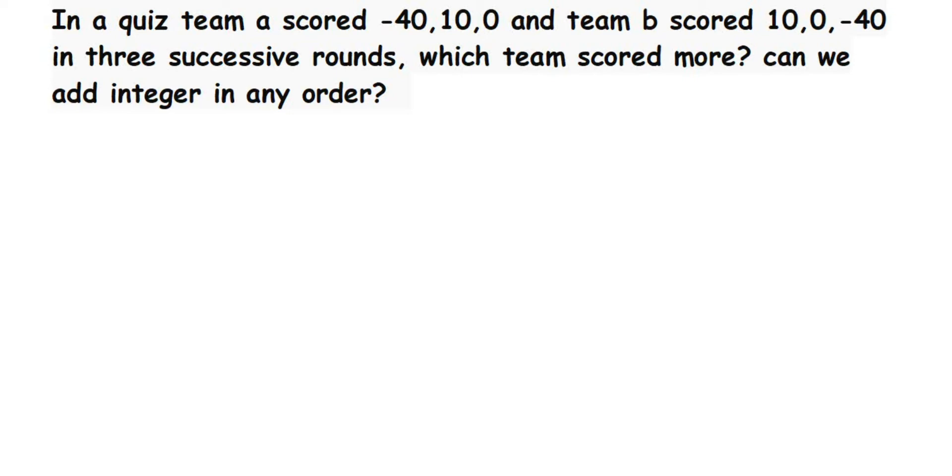Hey everyone, so here's a question from integers. In a quiz, team A scored -40, 10, 0 and team B scored 10, 0, -40 in three successive rounds. Which team scored more? Can we add integers in any order? This is a really interesting question - they're talking about two different teams.